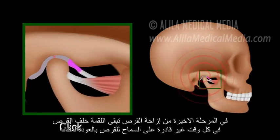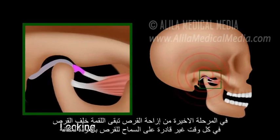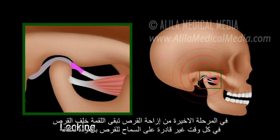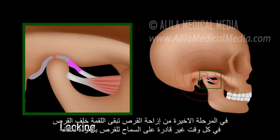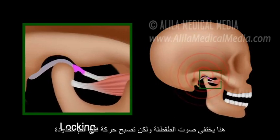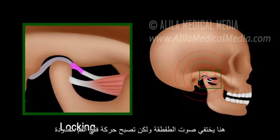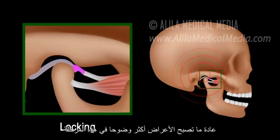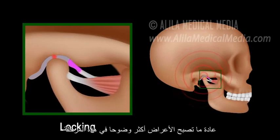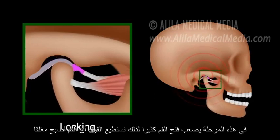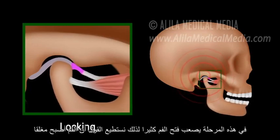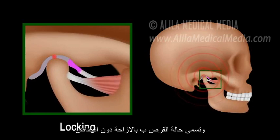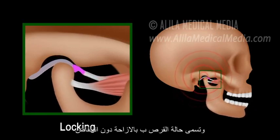In later stages of disc dislocation, the condyle stays behind the disc all the time, unable to get back onto the disc. The clicking sound disappears but mouth opening is limited. This is usually the most symptomatic stage. The jaw is said to be locked as it is unable to open wide. At this stage, the condition is called disc displacement without reduction.